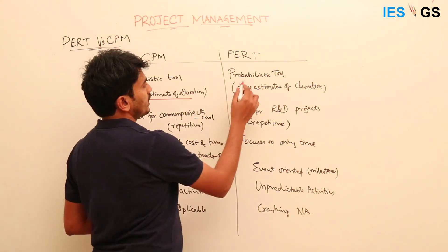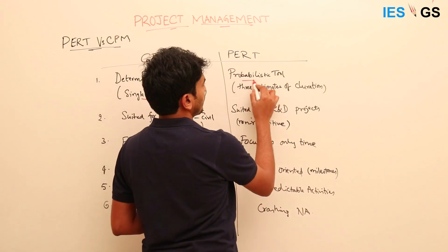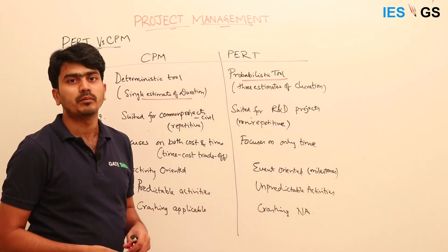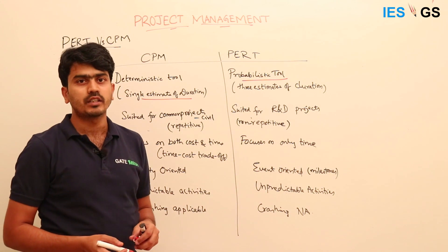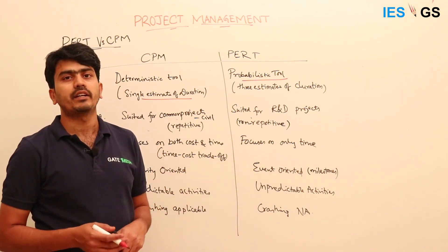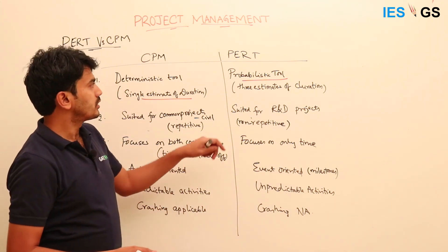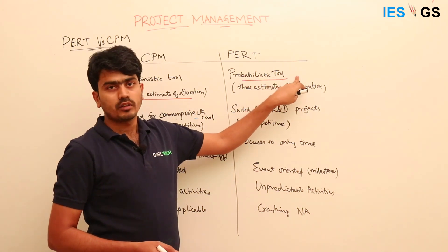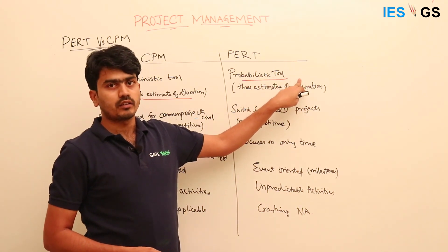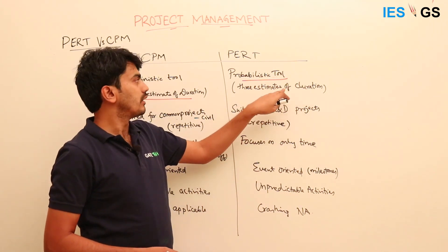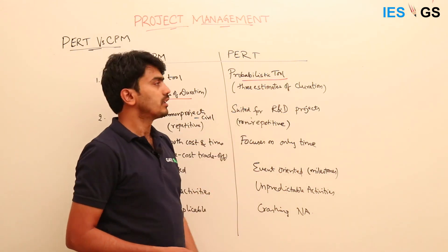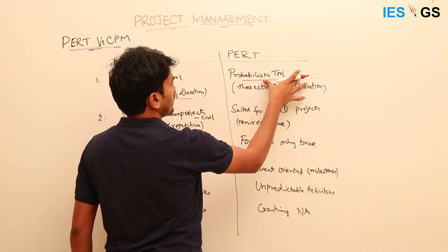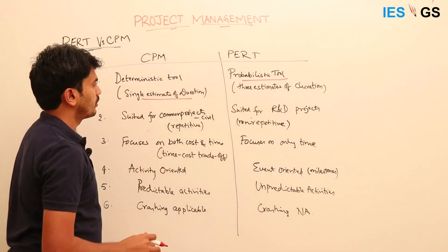PERT is a probabilistic tool in the sense that it uses multiple estimates in order to arrive at activity duration, because most of the activity times are not known — they are uncertain. So PERT is referred to as a probabilistic tool and CPM is a deterministic tool.